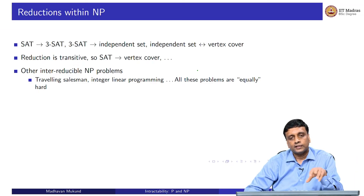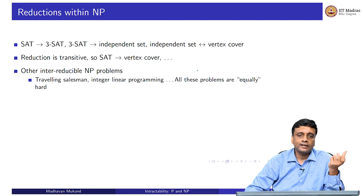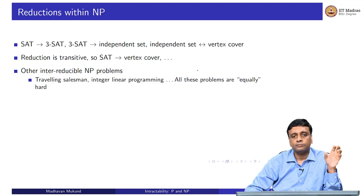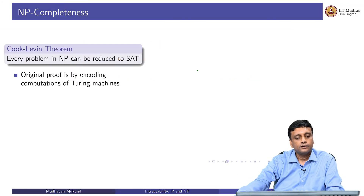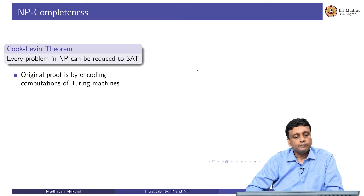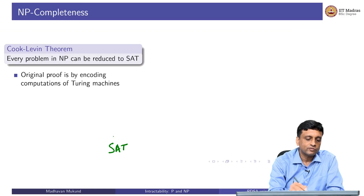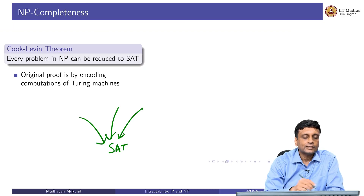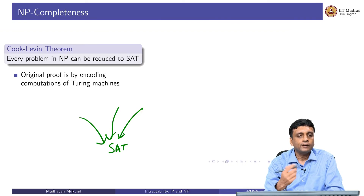It turns out that many other problems we have looked at — travelling salesman, and integer linear programming when we constrain solutions to have integer values — also fall into this category. There is a theorem due to Cook and Levin which says that every problem in NP can be reduced to SAT. SAT was the first problem we started with — Boolean satisfiability. So every problem in NP can actually be transformed into SAT. If you can solve SAT, you can solve all of them; or all of them are hard because SAT is hard.